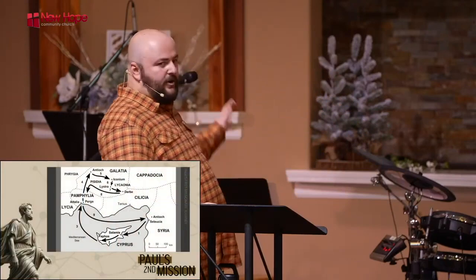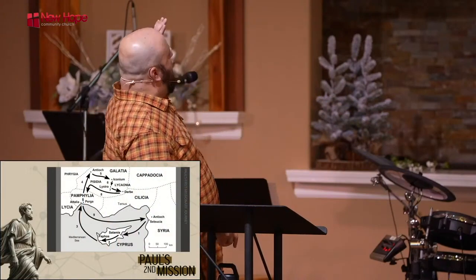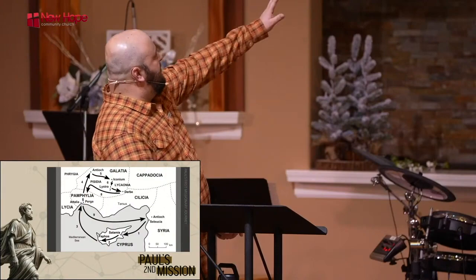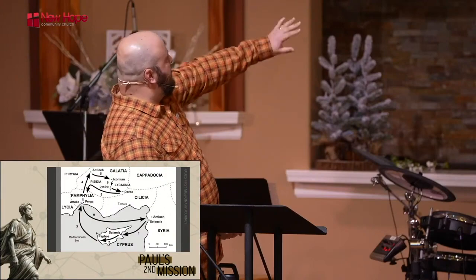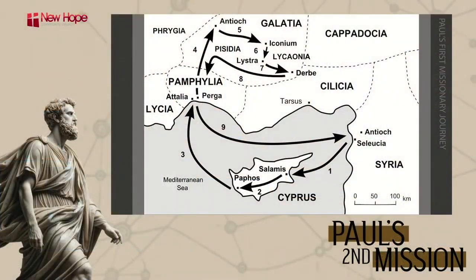The first is Paul's first missionary journey. You can see that he starts in Antioch, Seleucia, makes his way around through Cyprus into Lyca and Pamphylia, and kind of makes a little loop-de-loop up there before he comes on his way back to Antioch where he was sent and began.